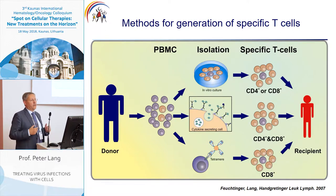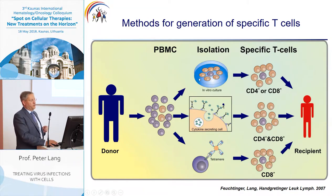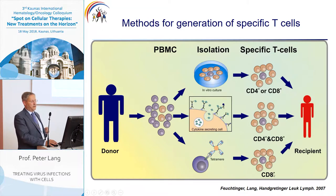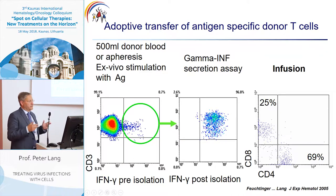There are three principal methods for generation of specific T cells. First, culture and repetitive stimulation, which needs several months and yields a combination of CD4 and CD8 cells. Second, the cytokine secretion assay, which also yields a combination of cells. Third, tetramer staining, which yields only CD8-positive cells. I want to focus on the cytokine secretion assay.